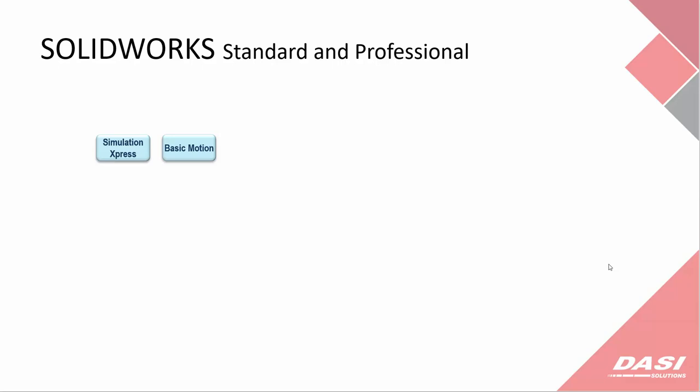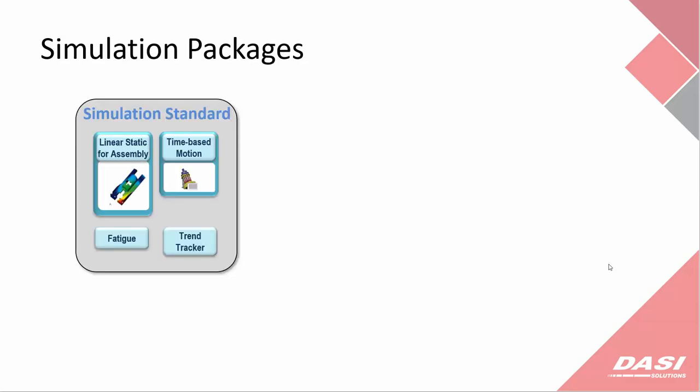Simulation Standard will expand the capability of those two tools. Instead of Simulation Express, which was only for single-body parts, Simulation Standard gives you the ability to run the same types of analyses on assemblies. Time-Based Motion allows you to calculate forces on joints and perform more complex motor operations and apply forces — much more than what Basic Motion allowed. It also includes a couple of other tools for fatigue and trend tracking.